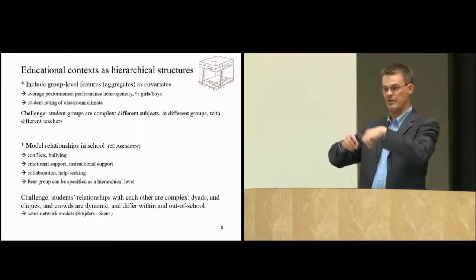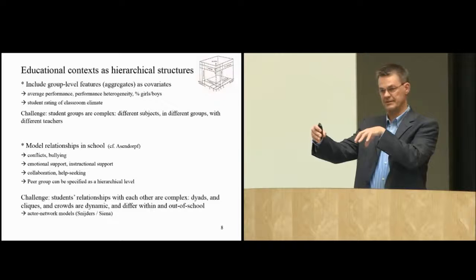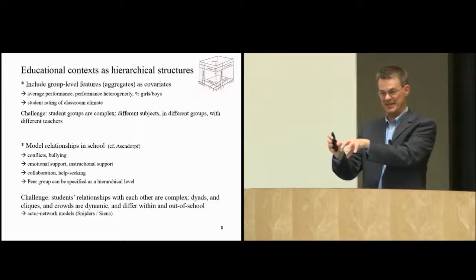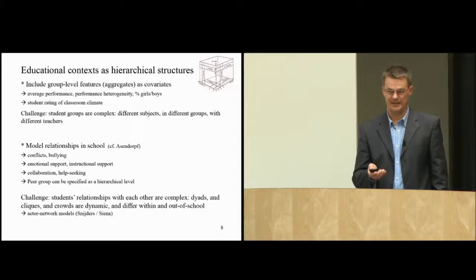Other variables that are important for understanding how we can support students' interpersonal learning processes are, for example, student ratings of classroom climate. But this poses a particular challenge when student groups are complex. Students in secondary school change group constellation when they go from one subject to another, and they also change teachers. So the complexity of classroom climate increases.